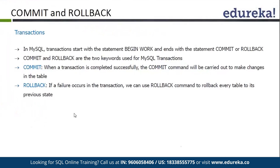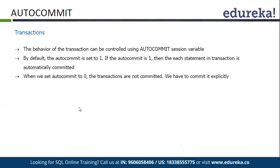Transactions basically begin with BEGIN and end with COMMIT or ROLLBACK. Either we commit our transactions or, if there is an issue, we rollback. Commit simply means if the transaction is completed successfully, the commit command will make the changes permanent. Rollback means if there is an issue in any transaction action, everything will be rolled back. The behavior of the transaction can be controlled by autocommit. Autocommit is by default 1 — if it is 1, all transaction statements are committed automatically without needing the commit command. When it is 0, we have to provide the commit clause at the end of the transaction.